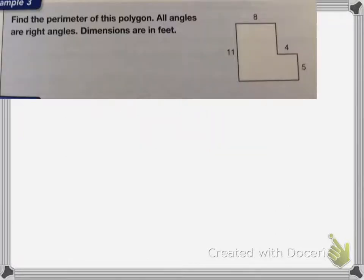Now this shape here is a polygon, but it's not a regular polygon. All the angles are right angles and my dimensions are in feet. So when I'm having an irregular shape, I need to make sure I know how long every side is. If you look carefully, I do not know the length of this side or this side, here or here. So I need to figure those out first.